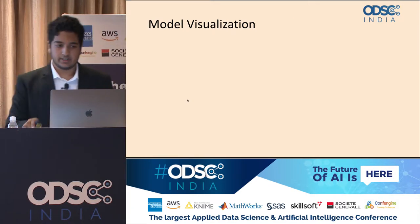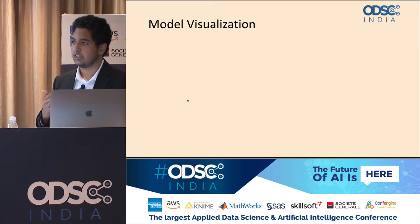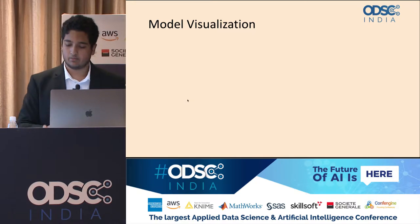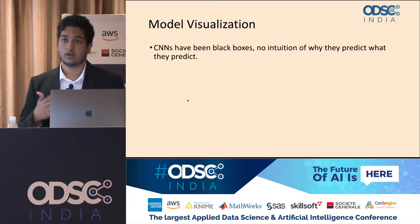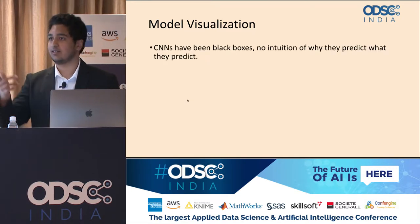CNNs, like other deep neural networks, have been black boxes, giving users no intuition as to how they're predicting.